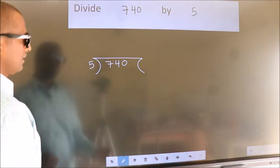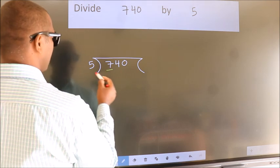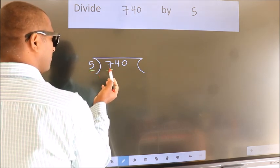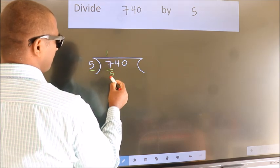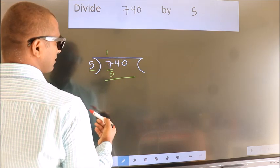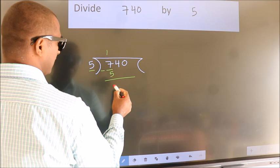This is your step 1. Here we have 7, here 5. A number close to 7 in 5 table is 5 once 5. Now we should subtract. We get 2.